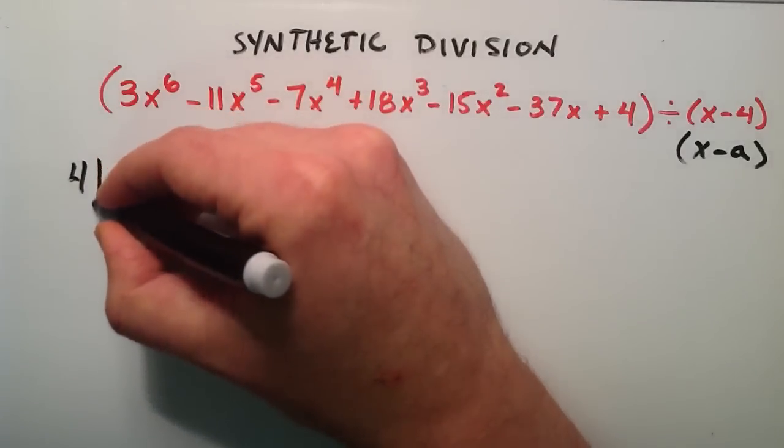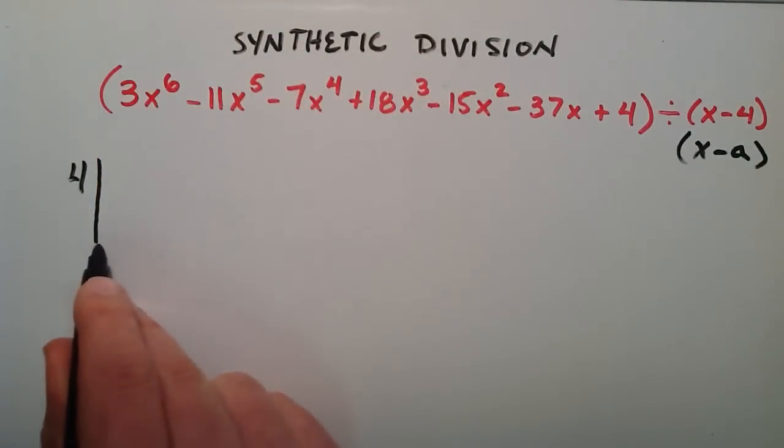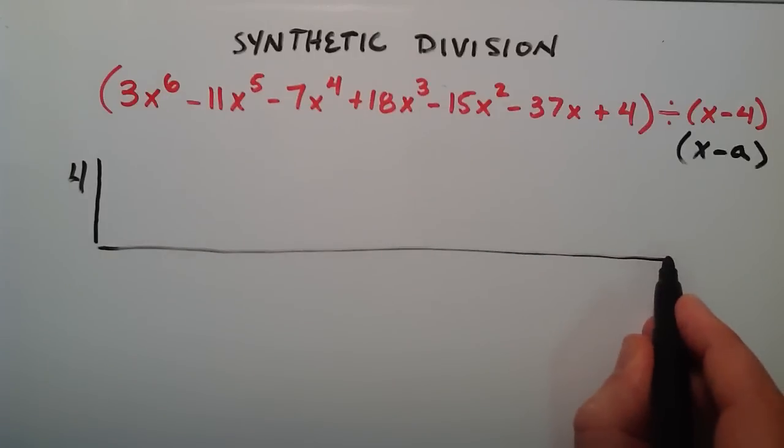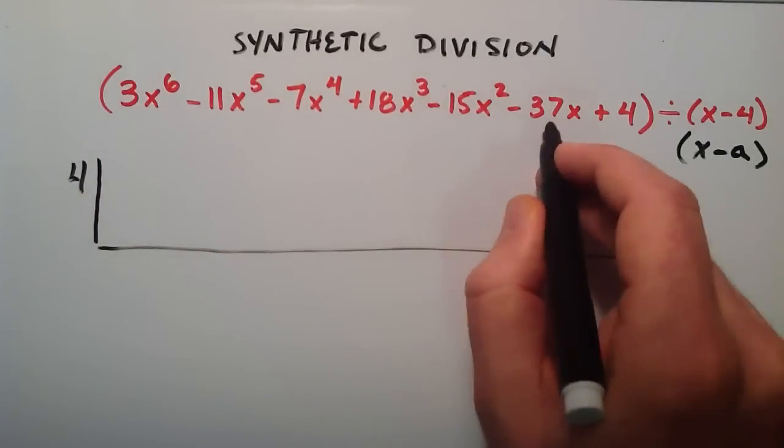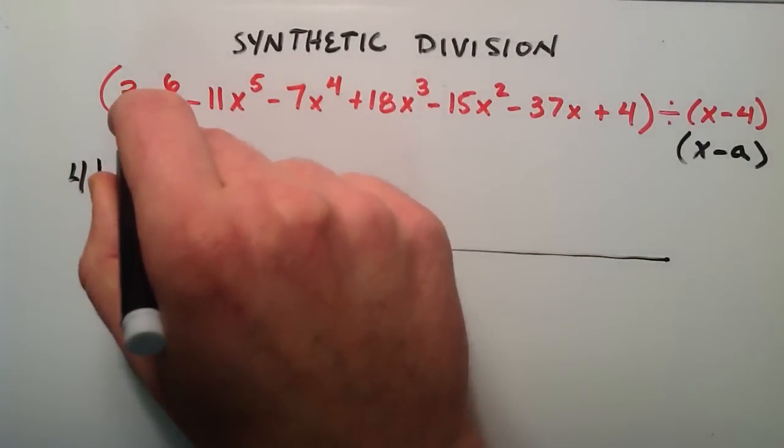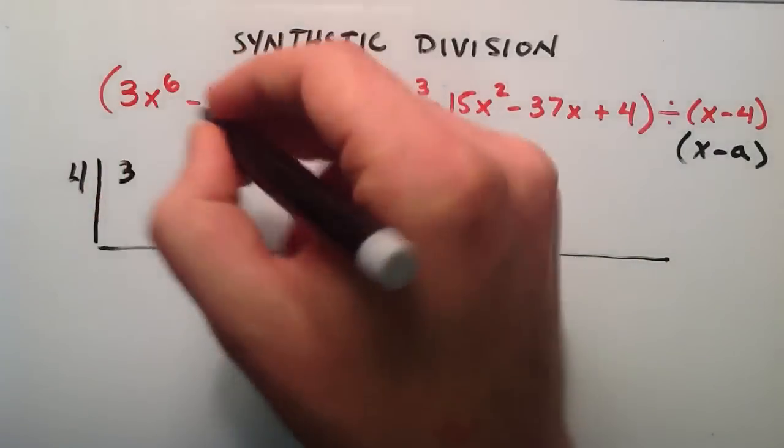And then we just kind of draw this little box type thing here. And what we do next is we just pull the coefficients off of all of our terms here. And we write them down. So we're just going to take the 3, we're going to write the 3 down,